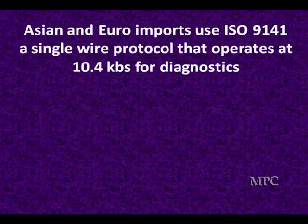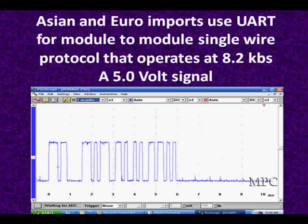European and Asian vehicles use ISO 9141 for diagnostics — a single wire for diagnostic values, but it only has data for diagnostics. For module-to-module communications, they use UART. UART is commonly available — everybody uses it. Computers, printers, and modules all use it. It's a standard off-the-shelf communications protocol widely used in computers, printers, and inside modules, including within networks like CAN. This is a zero to five volt signal, and it's got the same elements: dominant, recessive, request for communications, priority, then communications.